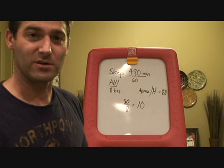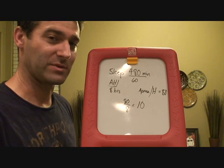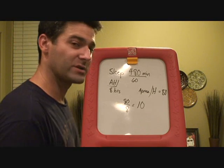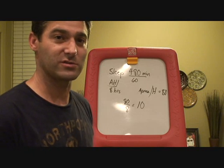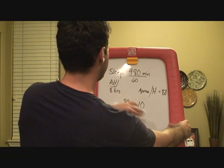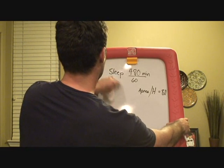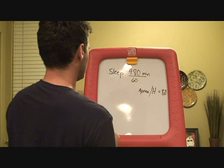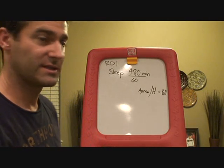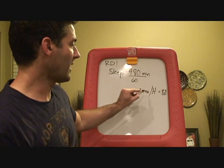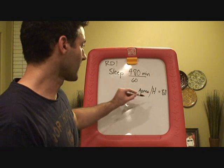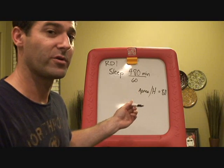Now as far as the RDI is concerned, it's pretty much the same thing except it's a little more liberal — it takes into account RERAs as well, which are respiratory effort-related arousals. These are very similar to hypopneas, they just lack the desaturation. RDI stands for respiratory disturbance index. So you still have your apneas and hypopneas, which are 80, but now you have a bunch of RERAs thrown in as well.